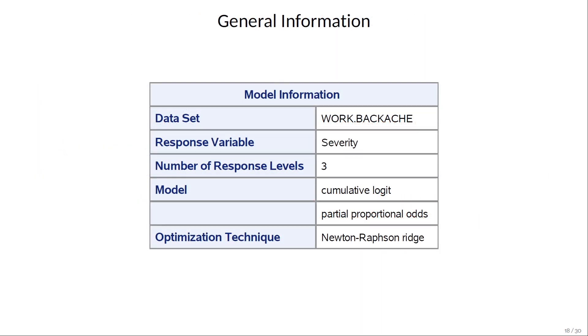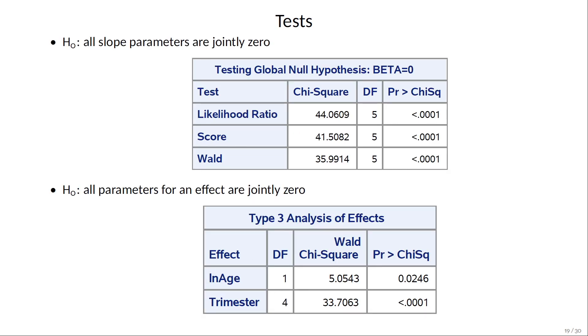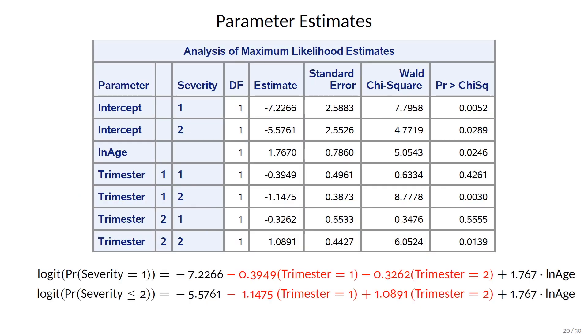The model information tells you that you're fitting a partial proportional odds model. These are the usual tests that PROC LOGISTIC produces to test that various sets of parameters are jointly zero. They're all rejected, which is good, and we can move on to the parameter estimates.